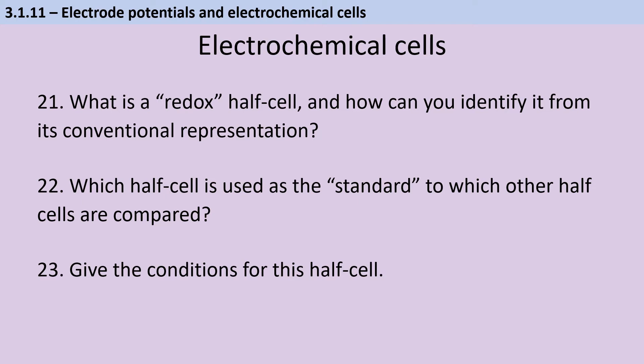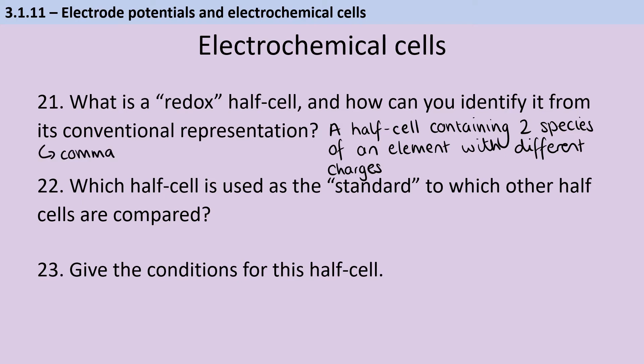A redox half cell is one where you've got multiple species that have come from the same element, which are oxidized to different degrees. So for instance, we've just mentioned that Fe2+ Fe3+ half cell. And so they have different charges, but they're both in the same phase. And we separate them with a comma instead of with a vertical bar. So for instance, in a vanadium redox couple cell, you have V2+ comma V3+ to show that they're both aqueous, but they are different to one another.